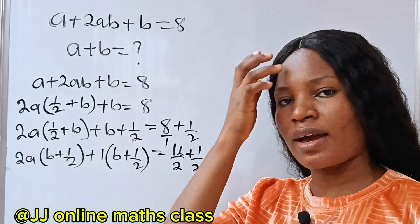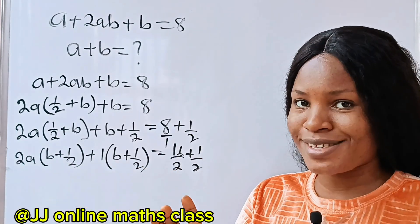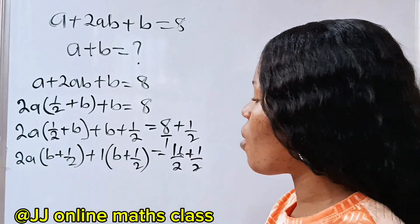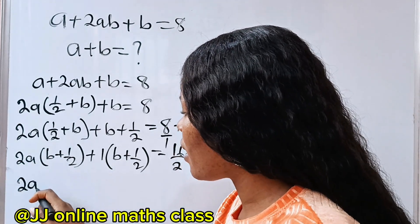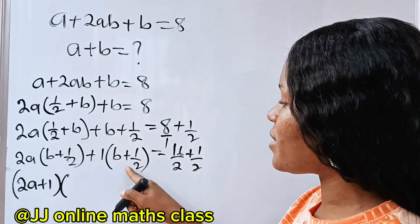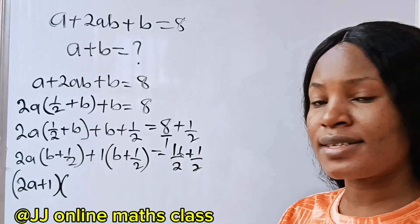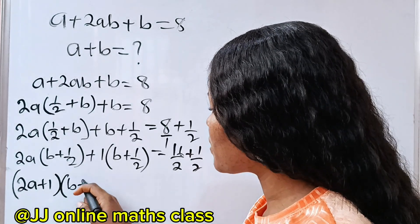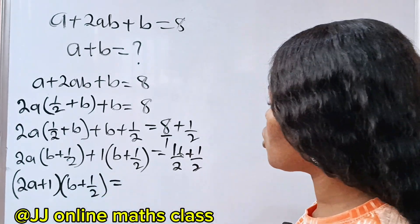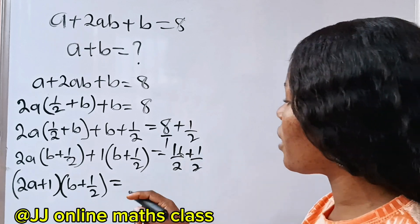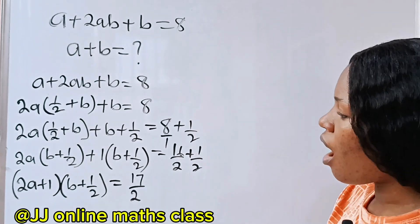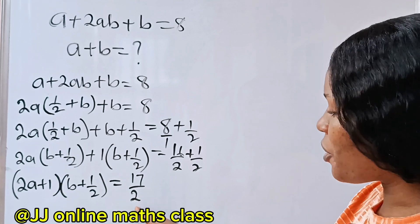So we can now factorize. We get (2a + 1) multiplied by (b + ½), since we have the same thing inside the brackets, is equal to 16 plus 1, which gives us 17 over 2.